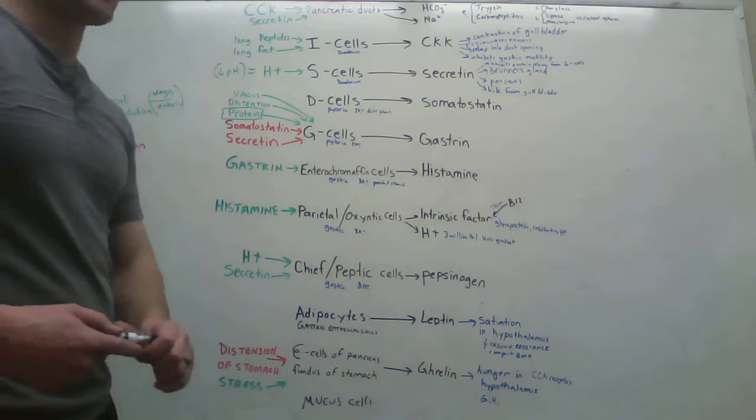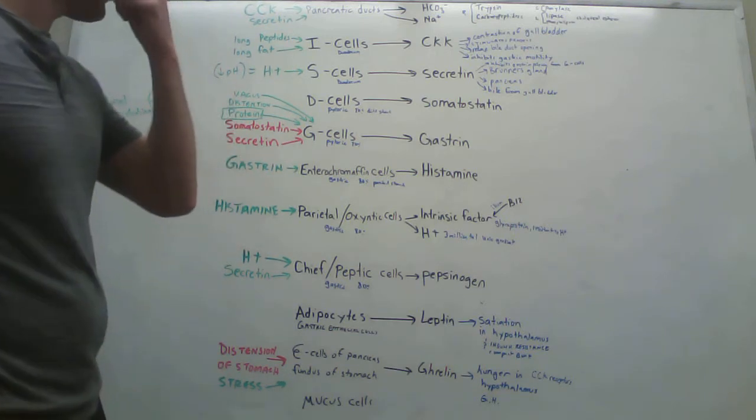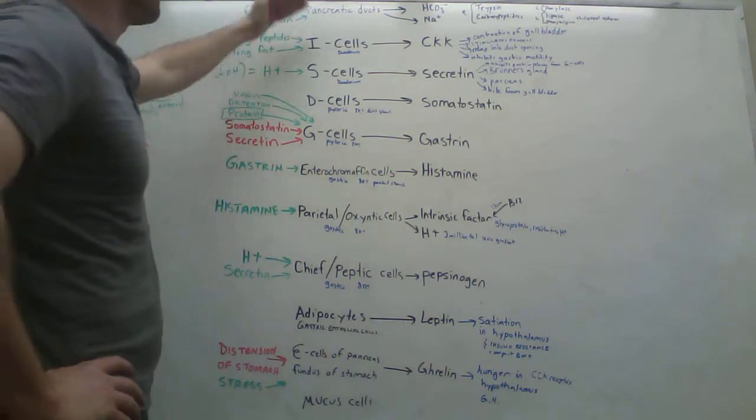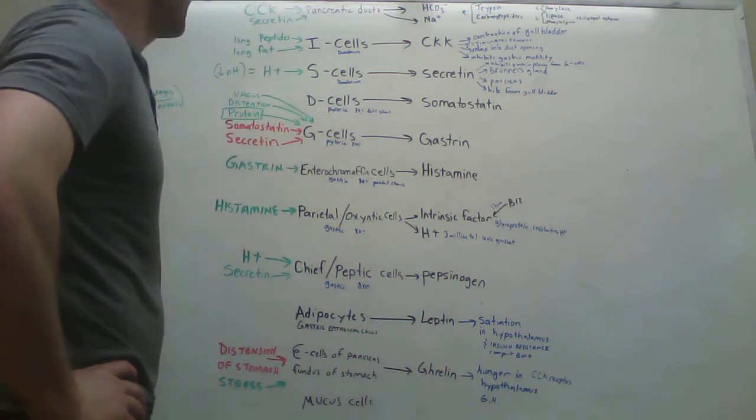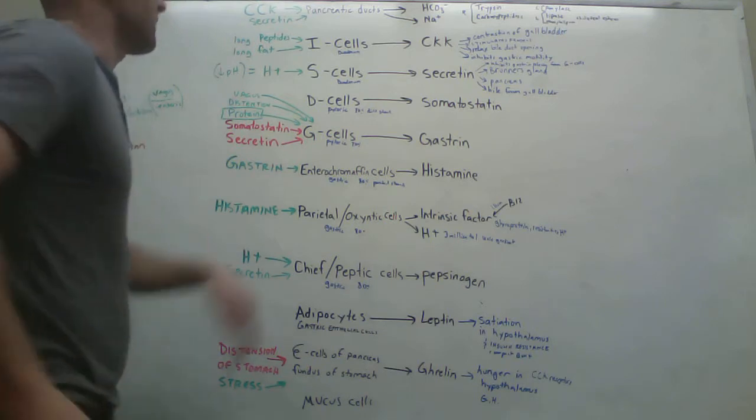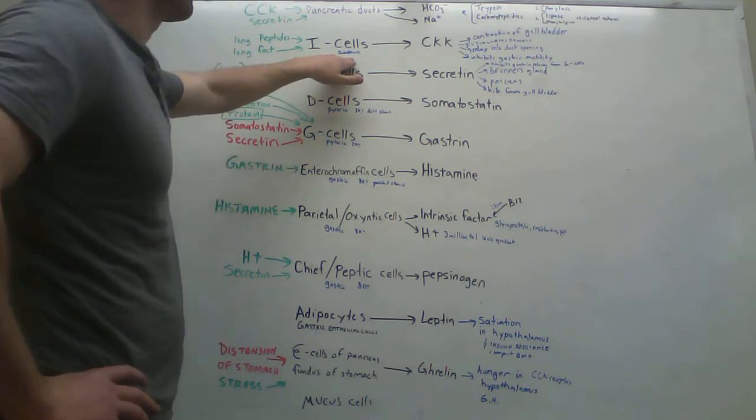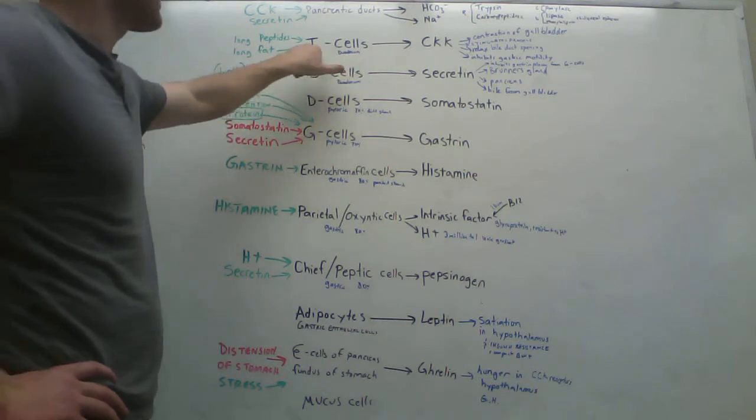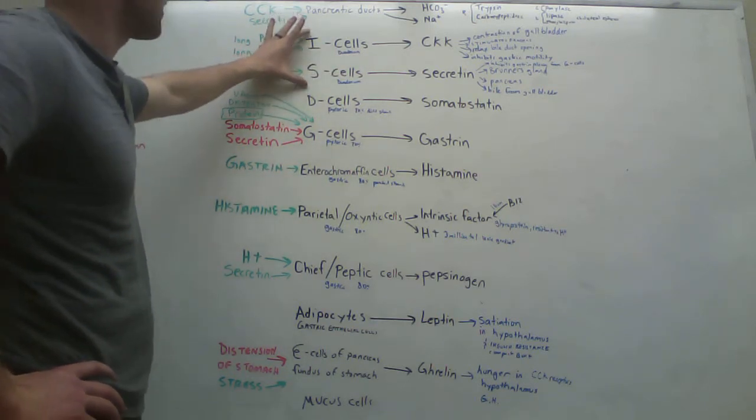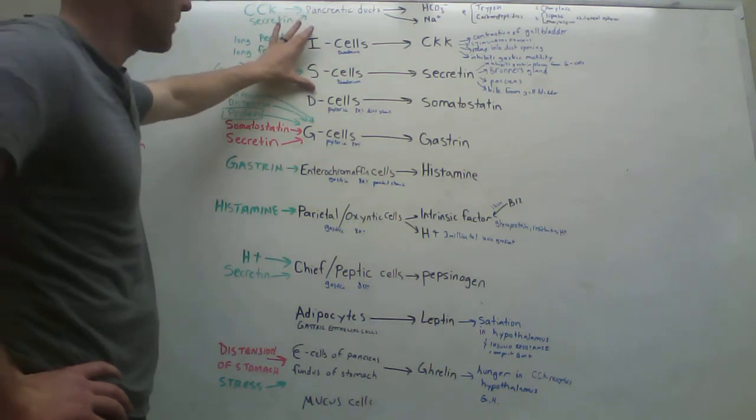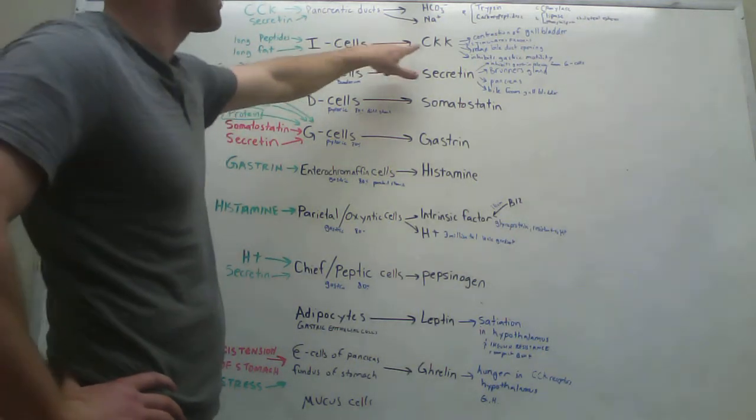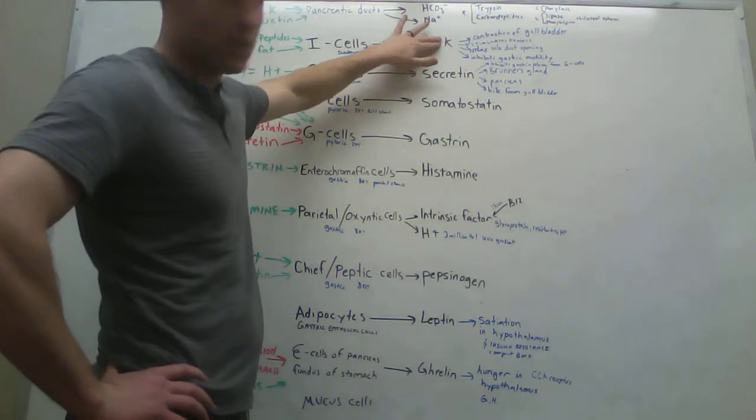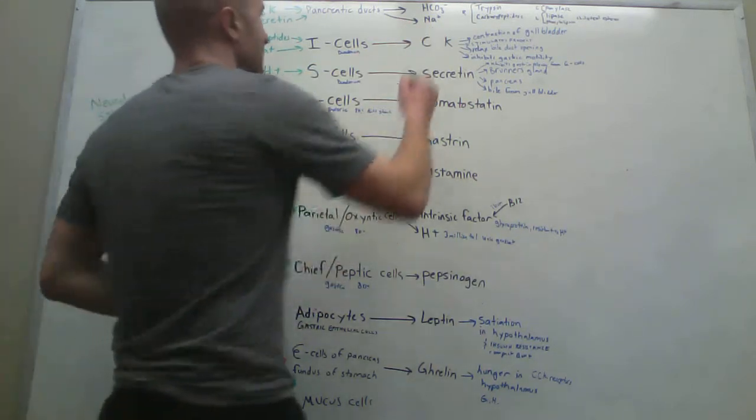A lot of information here, but maybe if this order is memorized. So I cells release, they're found in the duodenum, proximal duodenum. So I cells, the proximal duodenum, in fact both of these are, I and S, both found in proximal duodenum. They release, I cells release cholecystokinin, CCK.